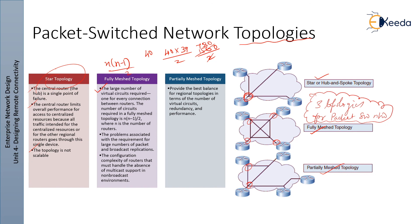So 780 wires are needed for just 40 connections. The problems associated with fully mesh topology include the requirement for a large number of packet and broadcast replications, configuration complexity of routers, and the absence of multicast support in the non-broadcast environment. These are the key limitations of using fully mesh topology.